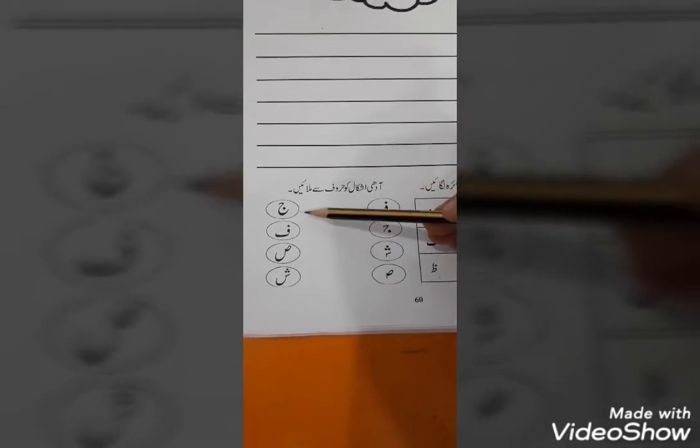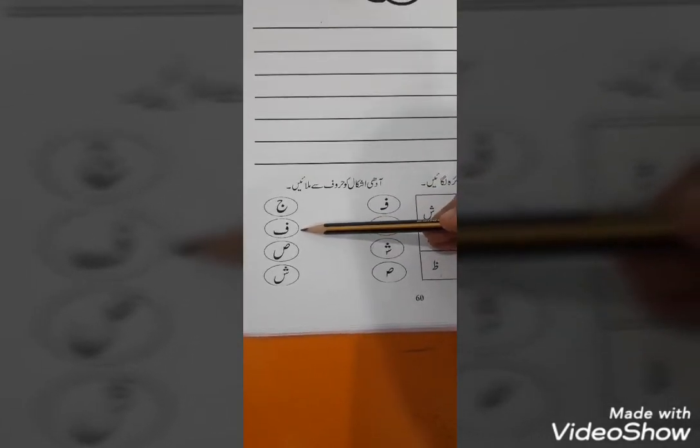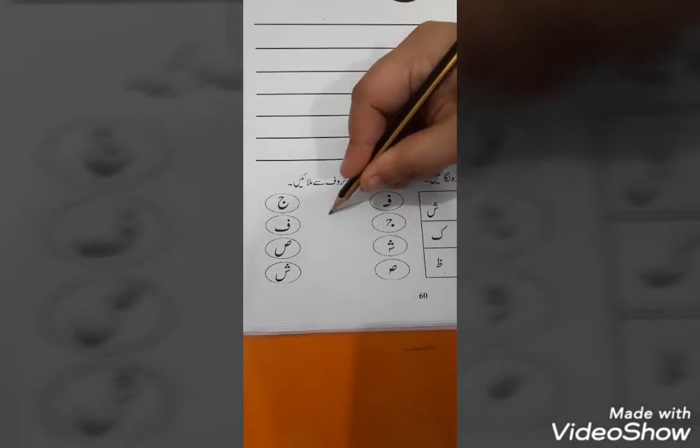This is fe ki aadhi shakal. And you have to find out harf fe here. Aapni jahaan se harf fe find out karna hai. So, where is harf fe? Yes, this is harf fe. Put a pencil on aadhi shakal of fe and match to the harf fe. Very good.